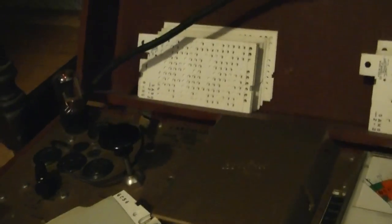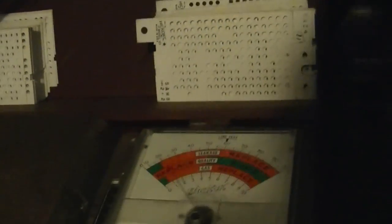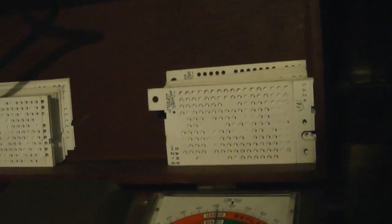I just popped in a CBS Hytron branded 6SN7GT. Let's test. Good. Not so good. Let's go to another one. It's an RCA JAN Joint Army Navy tube, must have been part of some military contract. Let's give that guy a try.